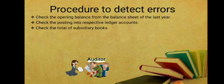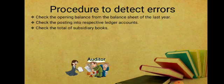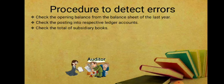The third step is to check the totals of subsidiary books — purchase book, sales book, purchase return book, and sales return book. The auditor checks whether the totals of these subsidiary books match with the totals reflected in the financial statements. If they don't match, there is an error or mistake somewhere.